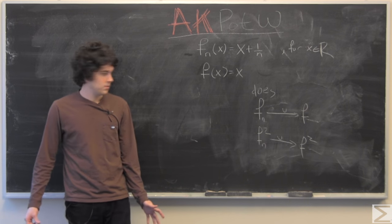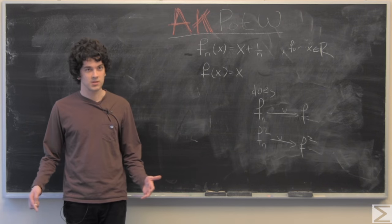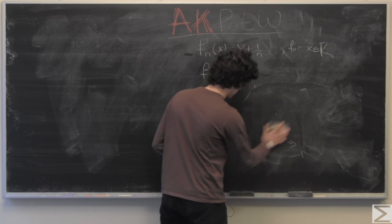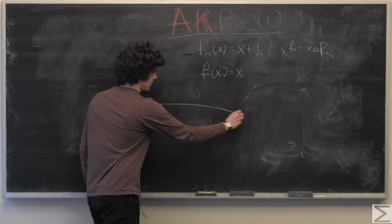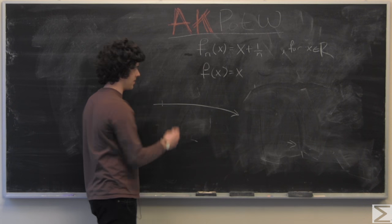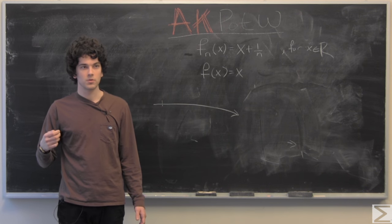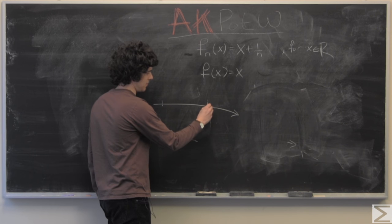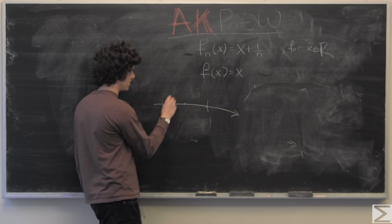If you don't know what a sequence of functions is, it's much like a sequence of points where you have, say on the number line, x sub n equals 1 over n where so you would have 1, 1 over 2, 1 over 3, 1 over 4 and so on.